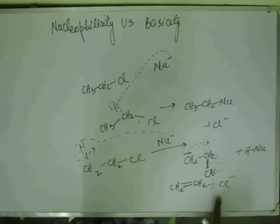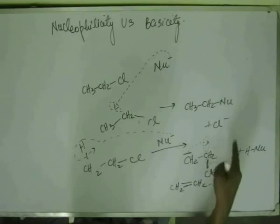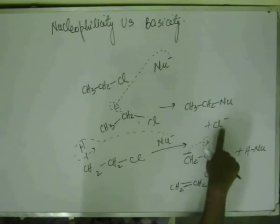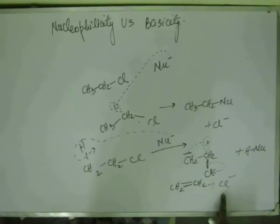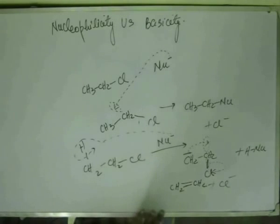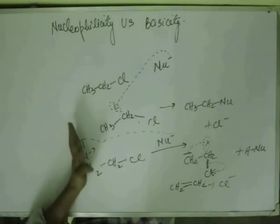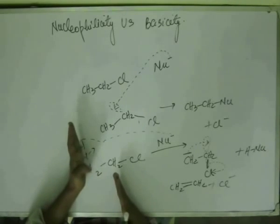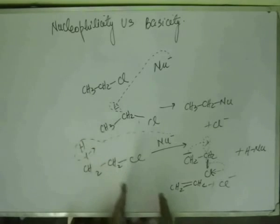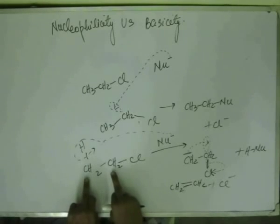So effectively, the same thing has happened. The negative charge is again on chlorine. In case of substitution, we also had a negative charge on chlorine. That's the most stable position of negative charge, but the methodology adopted is different. This is called elimination, because we have eliminated one hydrogen from beta position and one chlorine from alpha position, and a double bond has been formed.